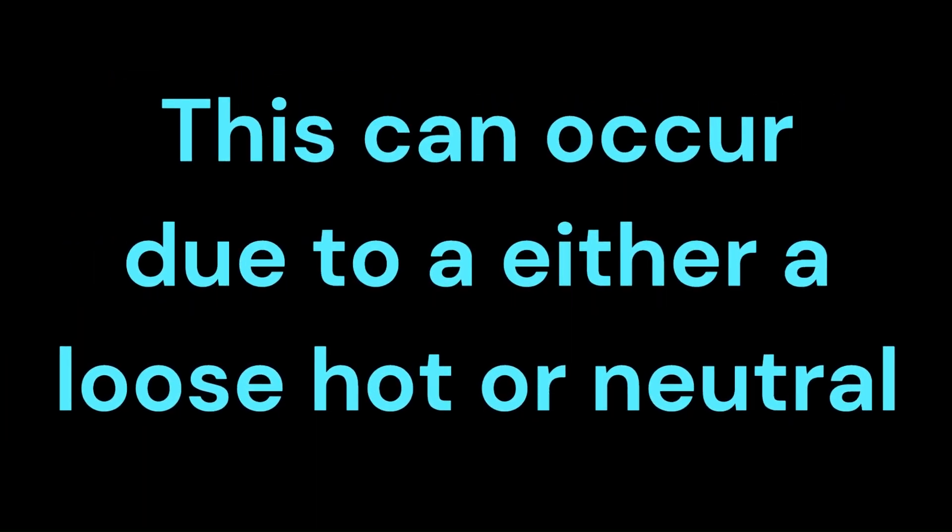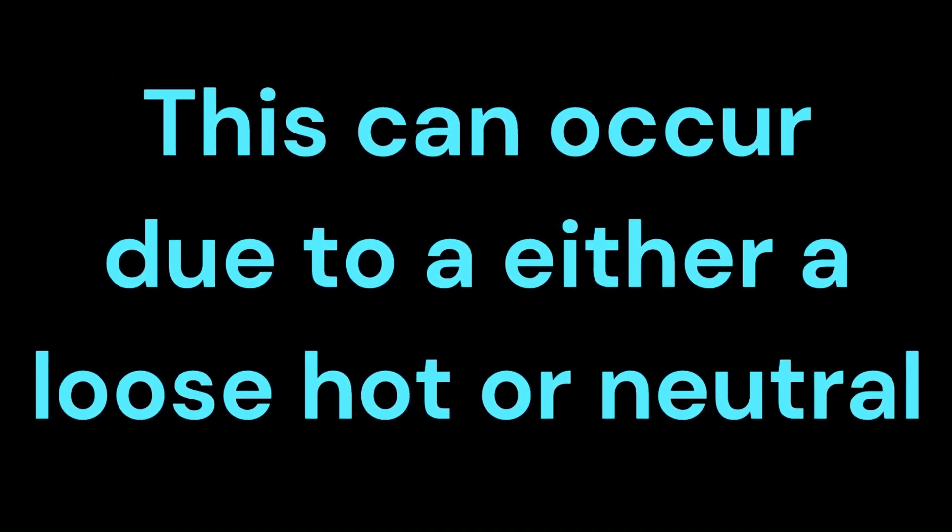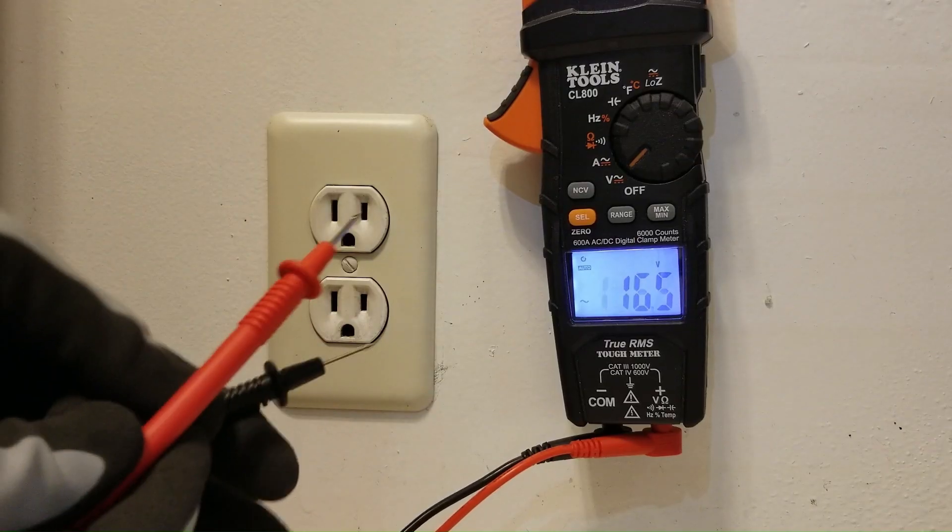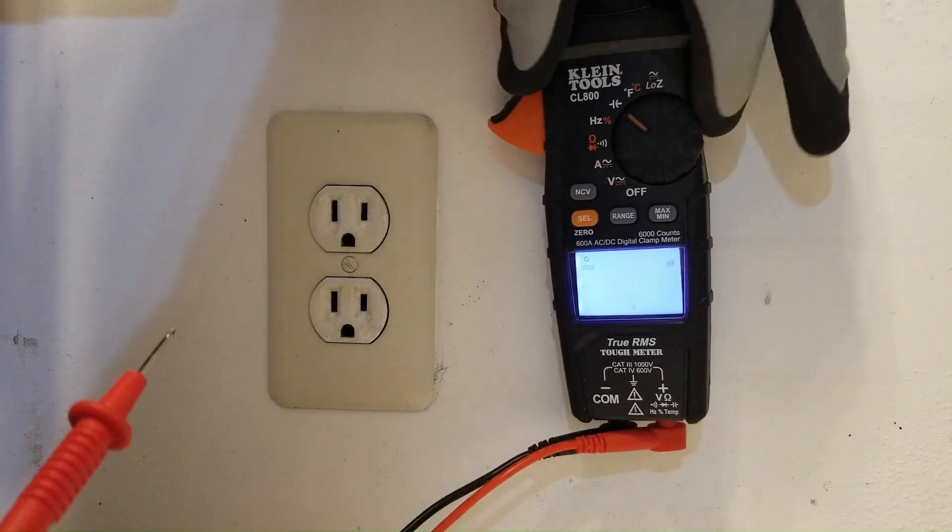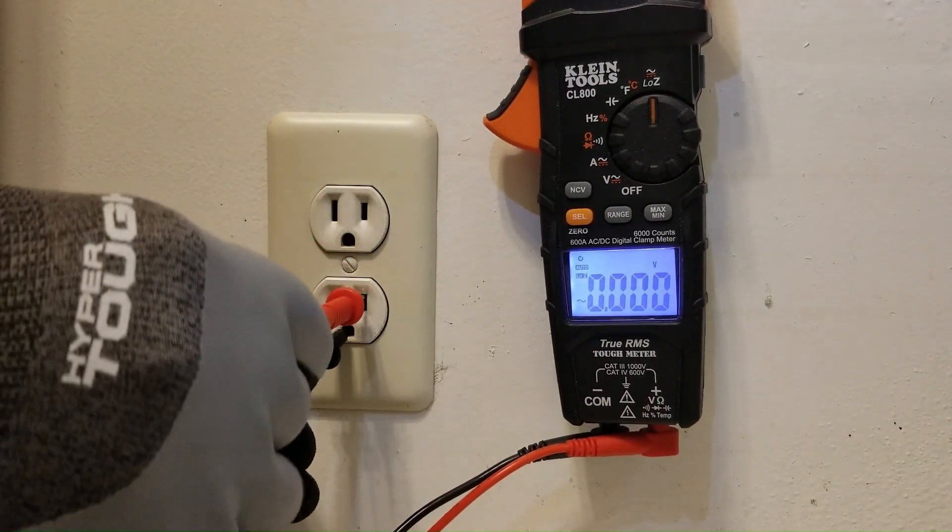As you can see, despite the outlet tester indicating that the outlet was in good working order, it was actually quite non-functional and needed intervention from an electrician. This phenomenon can occur whether the loose connection is on the hot line or the neutral. Now, a Low-Z meter would have detected this issue, but that's a topic for another video which is linked in the video description.